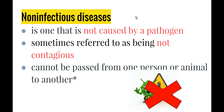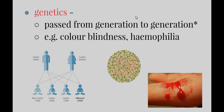Non-infectious diseases cannot be passed from one person or animal to another organism — with one exception: genetic diseases. Genetic diseases are passed from one generation to another through genes. We get half from our mother and half from our father, so if either parent has a genetic disorder there is a chance we can have it too and pass it on to our offspring. Examples include colour blindness, where a person cannot distinguish colours or is red-green colour blind, and haemophilia, where a person is missing the clotting factor in their blood, so when they cut themselves they bleed a lot because their blood cannot form a clot to seal the wound.